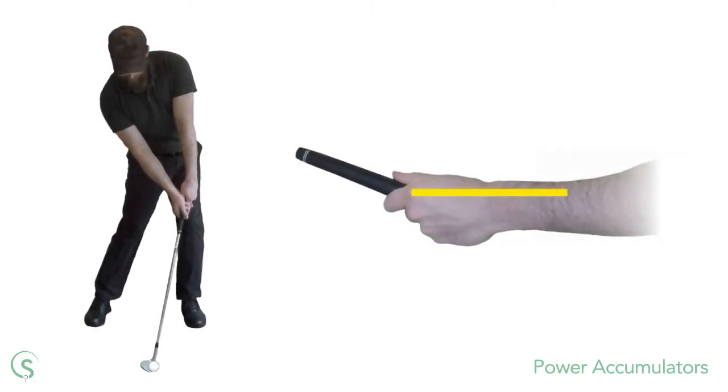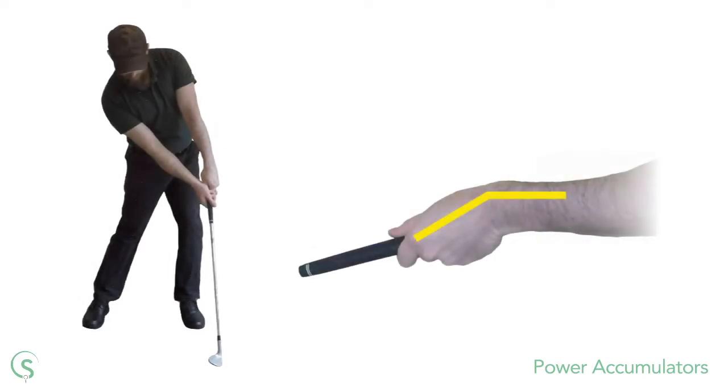At impact the left wrist has usually returned to its level alignment, but this isn't the inline condition the power accumulator is seeking. The left wrist will continue to uncock and release its power after impact until we reach full extension. Here the left wrist is fully uncocked and the left arm and club, the primary lever assembly, is at its maximum length.